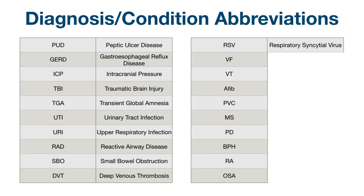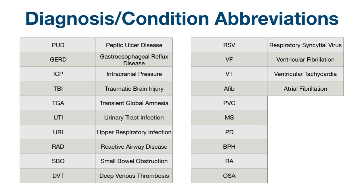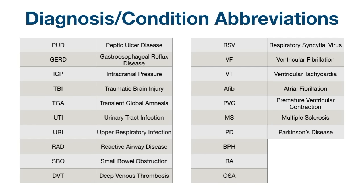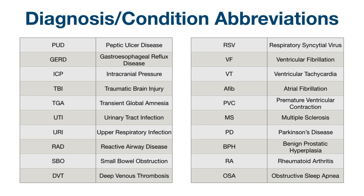RSV: respiratory syncytial virus. VF: ventricular fibrillation. VT: ventricular tachycardia. AFib or AF: atrial fibrillation. PVC: premature ventricular contraction. MS: multiple sclerosis. PD: Parkinson's disease. BPH: benign prostatic hyperplasia. RA: rheumatoid arthritis. OSA: obstructive sleep apnea.